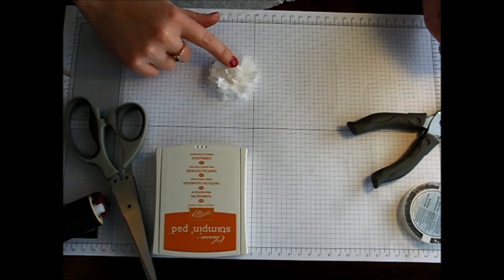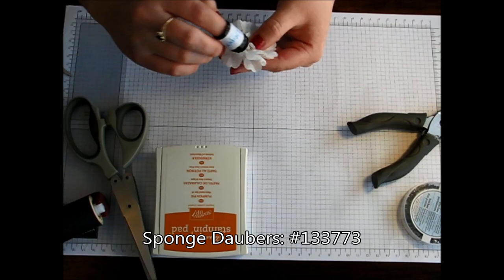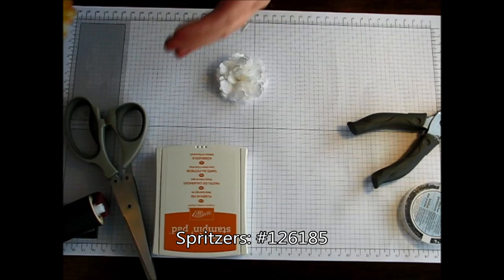You can leave it as a white flower. Or if you'd like you can take your sponge dauber, you know how much I love those, and brush the edges with it. You can also take your spritzers and spritz the flowers, which is what I did with the ones that I showed you on the projects.